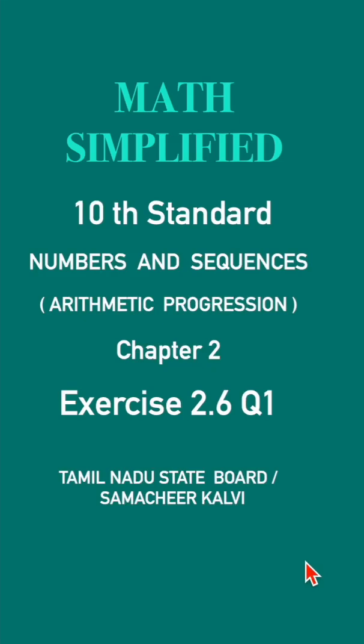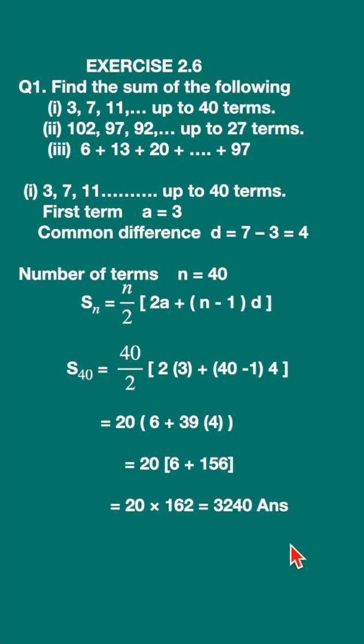Exercise 2.6 question 1, click here for the full exercise. Find the sum of the following. Number 1, this is the first sequence given to us: 3 comma 7 comma 11 up to 40 terms. Here let us write down